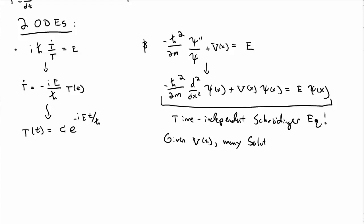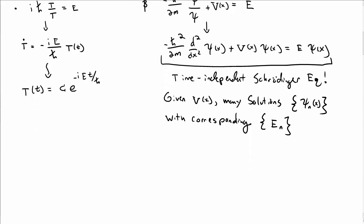It says that if you're given V of x, there are many solutions ψ_n of x to this equation, and each of those solutions has a corresponding separation constant E, or energy E, corresponding to them.